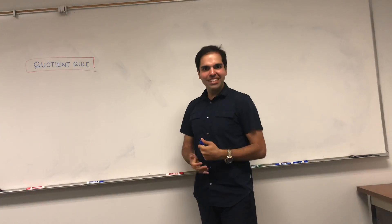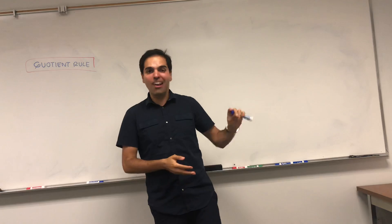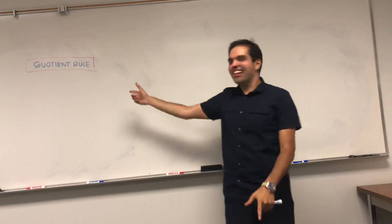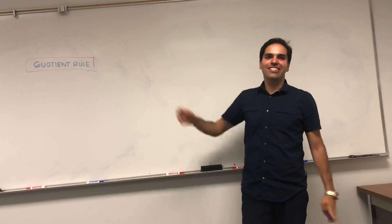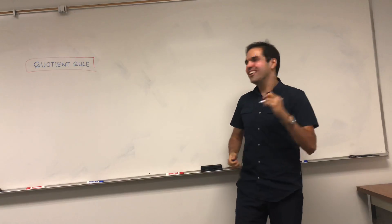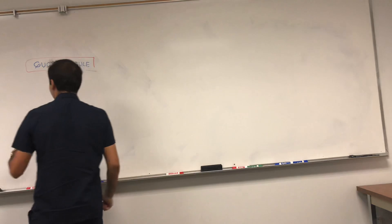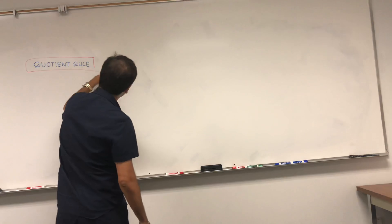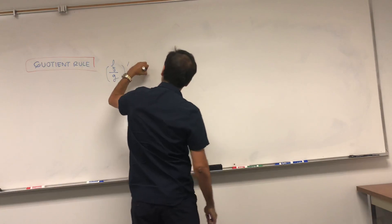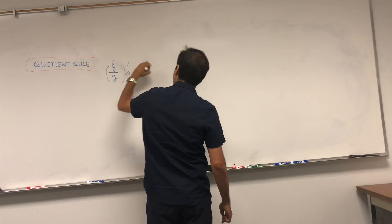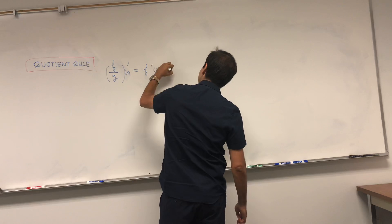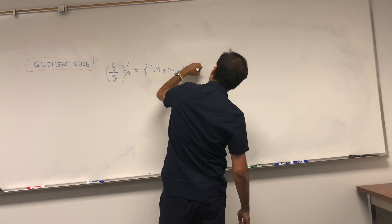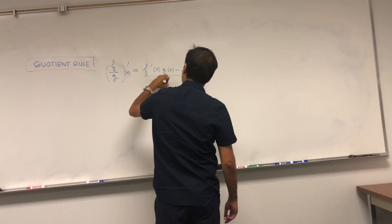In a previous video, I proved the product rule. In another video, I proved the chain rule. Well, the only thing left is maybe just to prove the quotient rule, which I'll do today. So let's just show that the derivative of f over g is f prime of x times g of x minus f of x g prime of x over g of x squared.